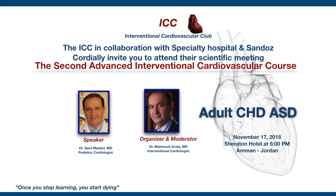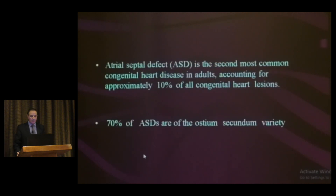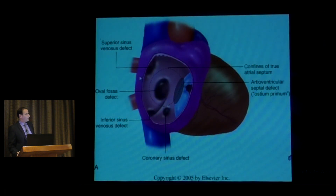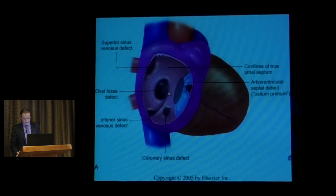In this presentation we talk about percutaneous device closure. ASD is the second most common congenital heart disease in adults, accounting for 10% of cases. 70% is the ostium secundum variety. The ASD secundum is situated in the fossa ovalis, and we have three other types: the sinus venosus defect, the ostium primum, and the coronary sinus defect ASD.